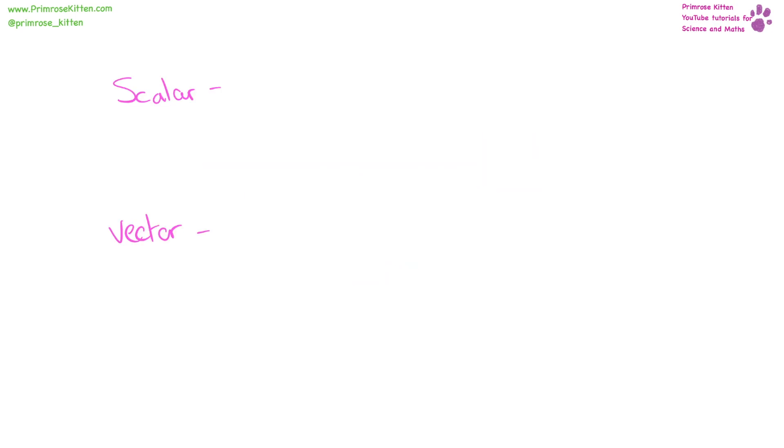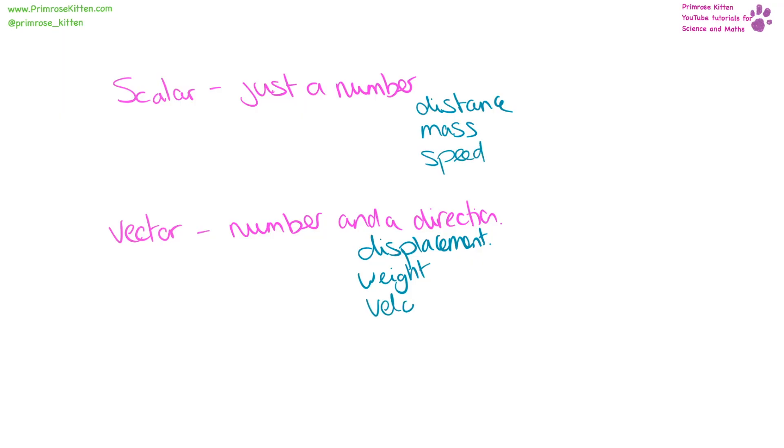A scalar quantity is going to be just a number. A vector quantity is going to be a number and a direction. For example, distance is scalar, but displacement is vector because it's distance in a direction. Mass is scalar, but weight, which is your mass upon the earth, is vector. Speed is scalar, but velocity, which is speed in a certain direction, is vector. Acceleration and force are both vector, and momentum is also vector.